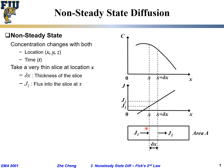We define a few terms. What is j1? If this is our thin slice, j1, as illustrated, is the flux flowing into that slice at location x. Similarly, we can define j2. As illustrated, j2 is the flux out of the thin slice at location x plus delta x.